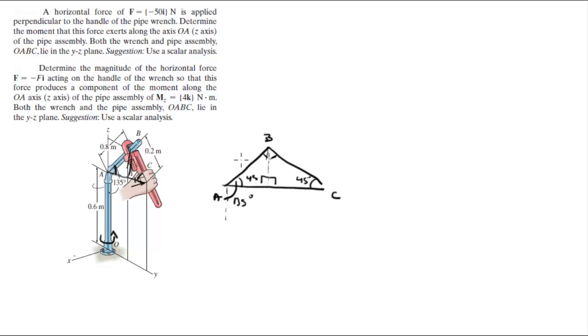So this is 0.8. Therefore, this distance right here is given by 0.8 cosine of 45. And this distance right here, if this is 0.2, is given by 0.2 cosine of 45. So when you calculate it and add these two together, you get that this is equal to 0.707.